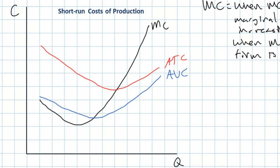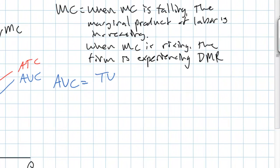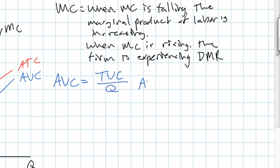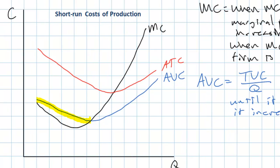Now let's look at the average variable cost curve. We need to look at a couple of ranges of the AVC curve in order to understand why the curve is shaped the way that it is. Average variable cost refers to the total variable cost — in other words, the total wage costs of a firm divided by the quantity of output. Notice that over a particular range of output, average variable cost is declining. The per unit wage costs of the firm decrease as long as the marginal cost of production is less than the average variable cost.